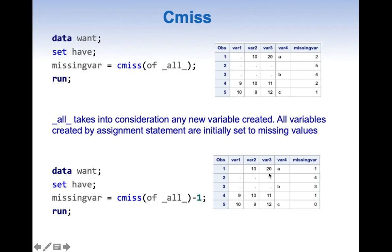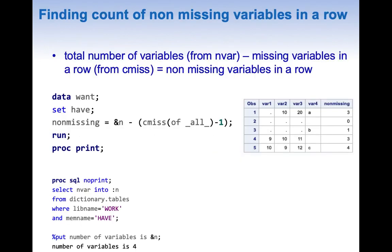To check only the variables we want, we can subtract one: CMISS(OF _ALL_) minus 1. This gives the exact value we want — here we have one missing value, here four, here three. This is an important point to remember whenever using CMISS with _ALL_, because it takes into consideration the newly created variable as well.